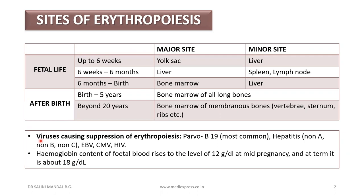With relation to erythropoiesis, the viruses that cause suppression of erythropoiesis are important. They are Parvovirus B19, which is the most common one; Hepatitis non-A, non-B and non-C; Epstein-Barr virus; cytomegalovirus; and HIV. If a question asks which among the following causes suppression and options are Parvovirus B19, Hepatitis, Epstein-Barr virus, and all of the above — the answer should be all of the above.